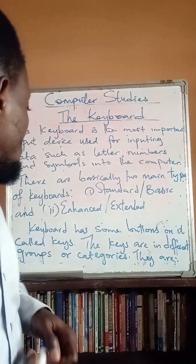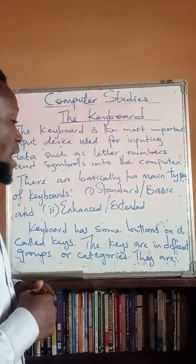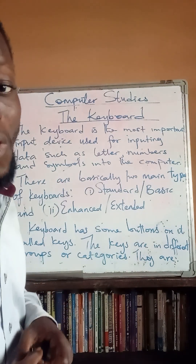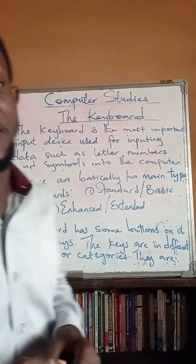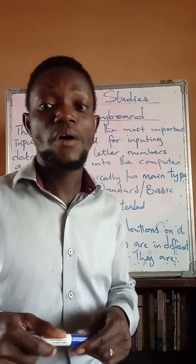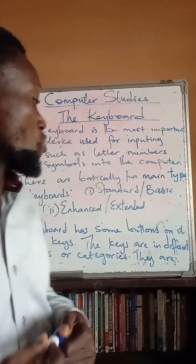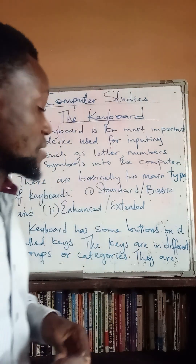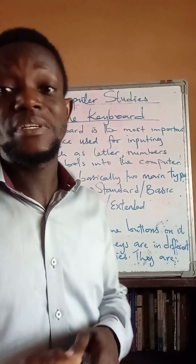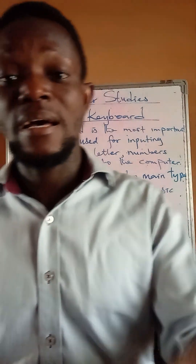The keyboard has some buttons on it called the keys. The keys are of different categories or groups. Now these categories are as follows.